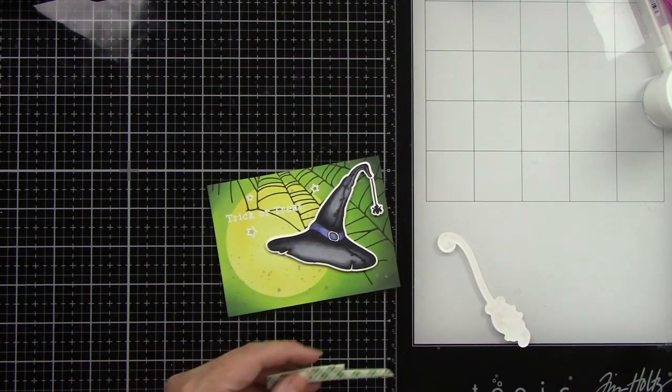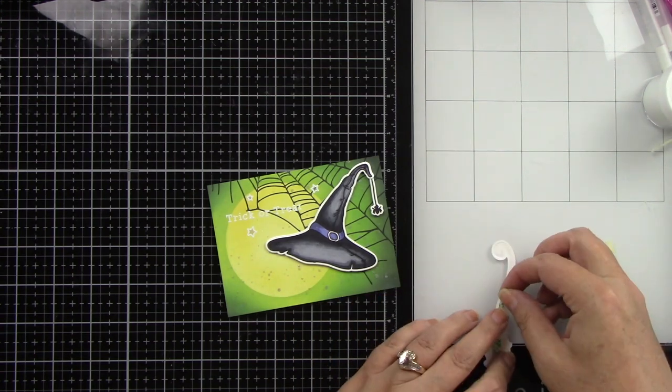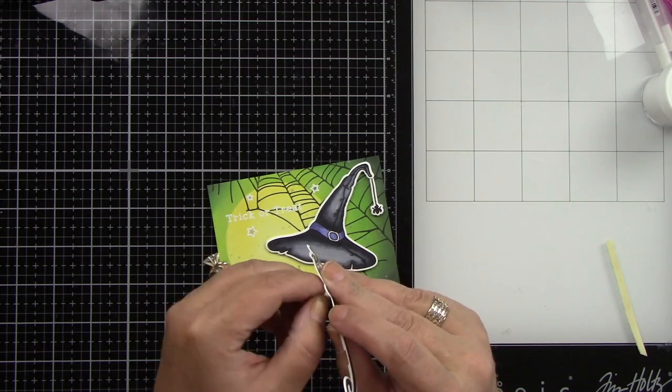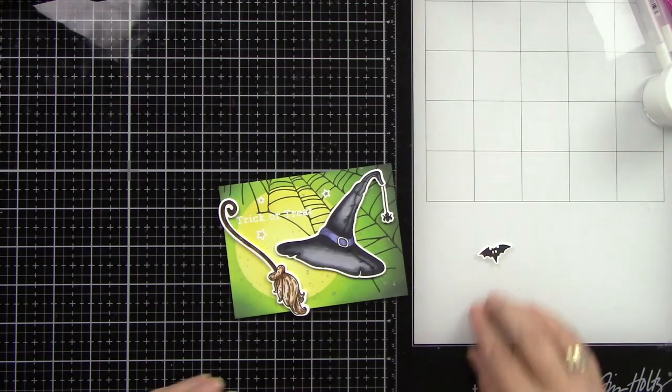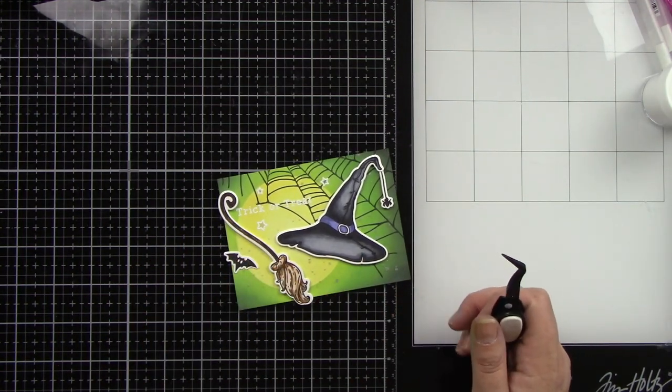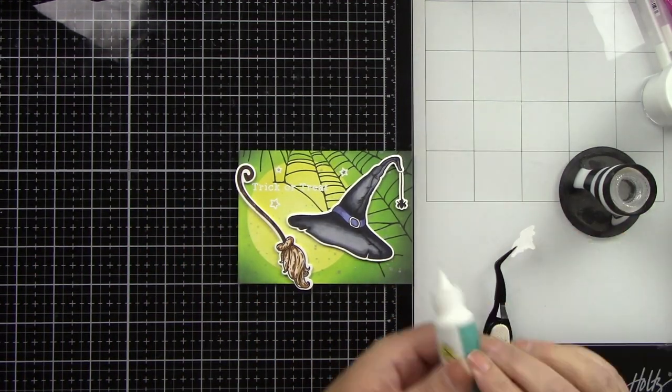The broom is going to have foam tape. I'm trimming that out with scissors, getting some really skinny pieces up on top. I want to tuck this around the sentiment—when laying out my sentiment, I made sure it would fit between the broom and witch's hat. The little bat is adhered directly to the background with liquid glue.